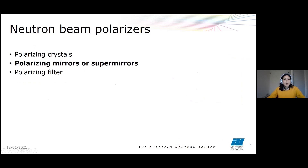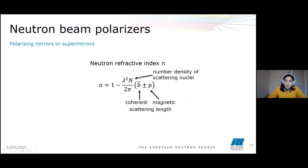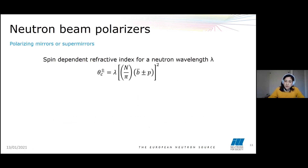The second beam polarizing method is the polarizing mirror. When we talk about polarizing mirrors we need to discuss the neutron refractive index, which involves the number density of scattering nuclei and the coherent and magnetic scattering length. We also talk about the critical glancing angle, important for calculating total reflection within the mirror. Combining these two equations gives us a spin-dependent refractive index for a defined neutron wavelength lambda.